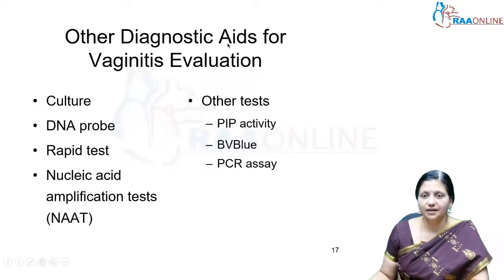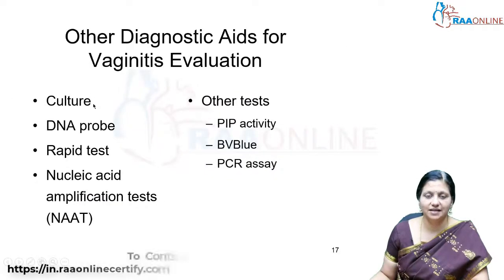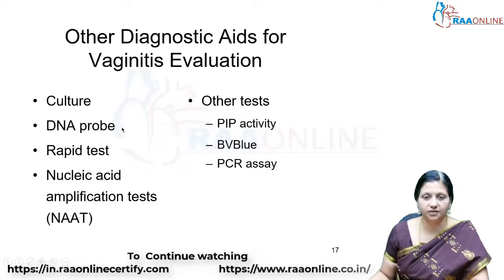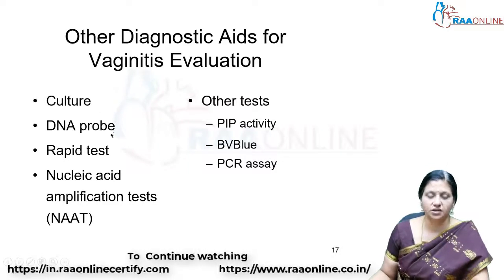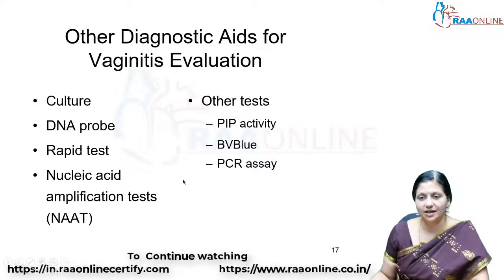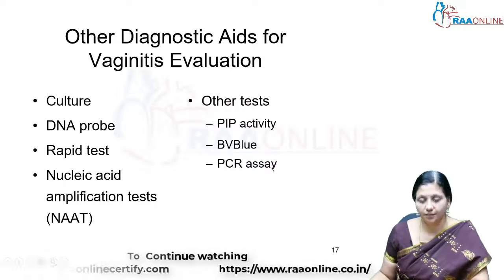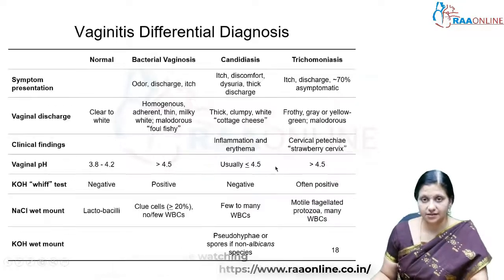Other tests for vaginal discharge include culture of the vaginal discharge, DNA probing, rapid tests, nucleic acid amplification tests (NAAT), PIP activity testing, the BV Blue test, and PCR assay.